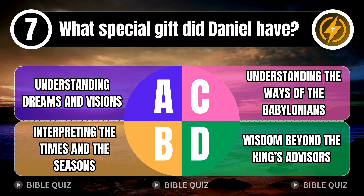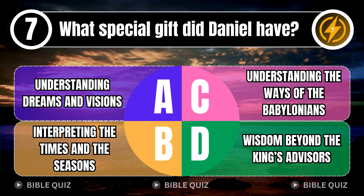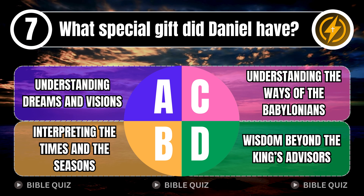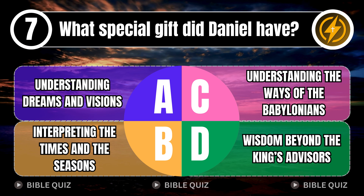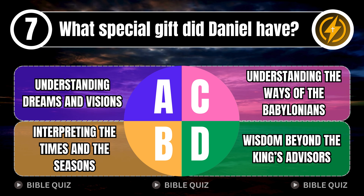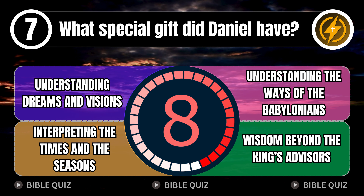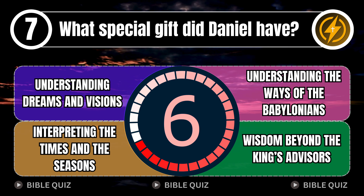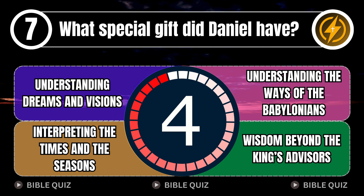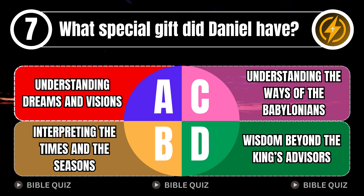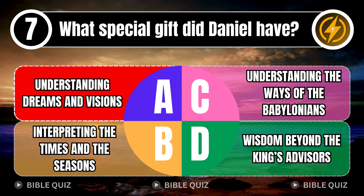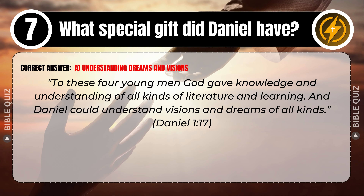Question 7: What special gift did Daniel have? A. Understanding dreams and visions. B. Interpreting the times and the seasons. C. Understanding the ways of the Babylonians. D. Wisdom beyond the king's advisors. Correct answer: A. Understanding dreams and visions. Explaining the Bible — to these four young men God gave knowledge and understanding of all kinds of literature and learning. And Daniel could understand visions and dreams of all kinds. Daniel 1 verse 17.